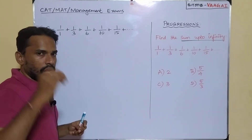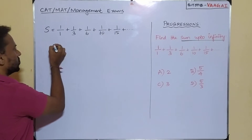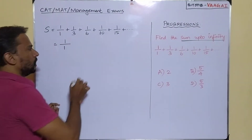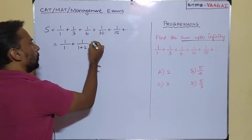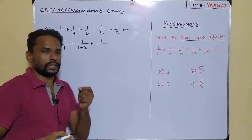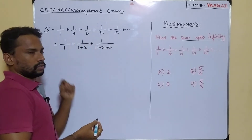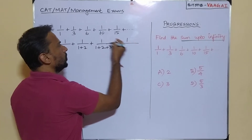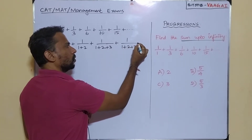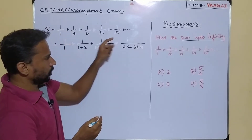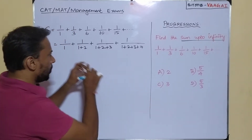These denominator values are none other than sums of natural numbers. The 1st term denominator is 1 = 1; the 2nd is 1+2 = 3; the 3rd is 1+2+3 = 6; the 4th is 1+2+3+4 = 10; and the 5th is 1+2+3+4+5 = 15.